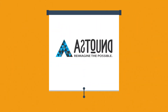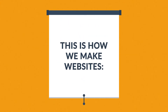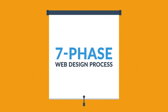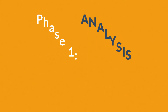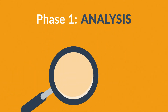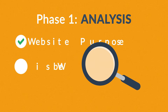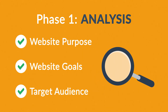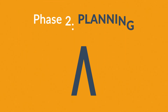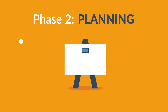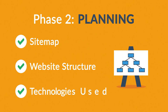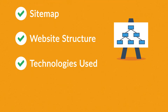What you have to do is look for someone serious about web design — that's where we come in. This is how we make websites, by following a seven-phase web design process. Phase one — Analysis: the first step is always about information gathering, identifying things like the website purpose, goals, and target audience. Phase two — Planning: a plan includes a definition of the site map, structure, and technologies to be used.